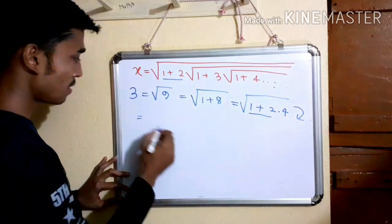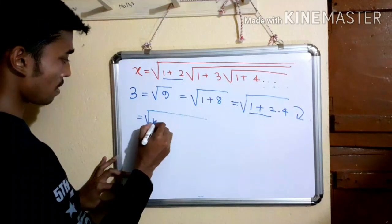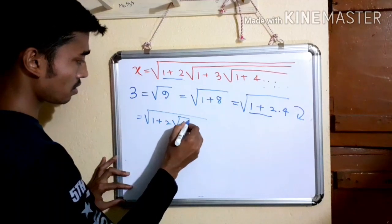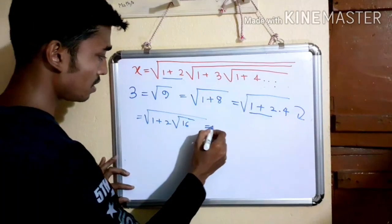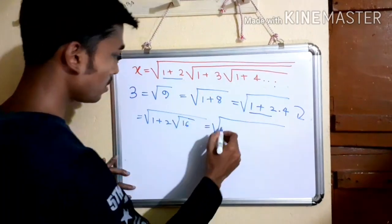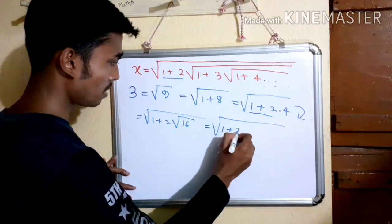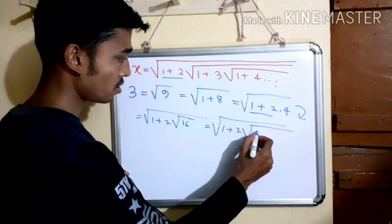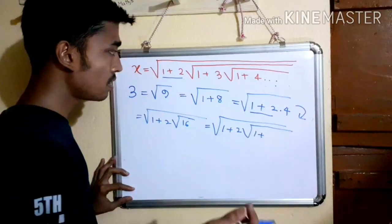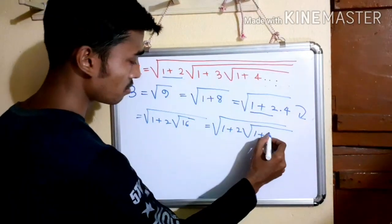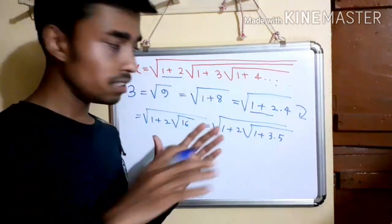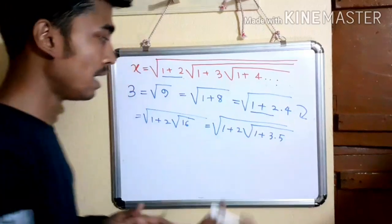You can see this, and now we're going to write this. Again back here from here to here: 1 plus 2 into 4 means root of 16. What is 16? It means 1 plus 15. But we can write 15 as 3, this means 3 into 5, and this iteration goes on and on.